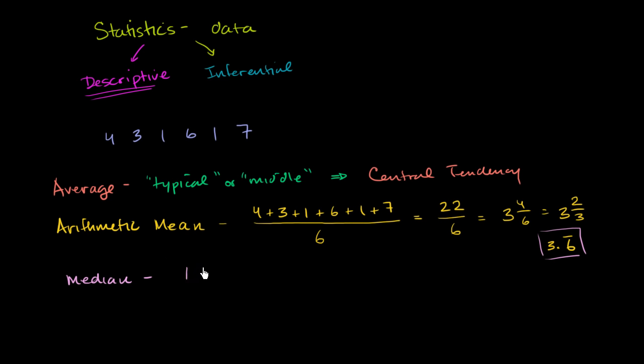So we have 1, then we have another 1, then we have a 3, then we have a 4, a 6, and a 7. So all I did is I reordered this. And so what's the middle number? Well, you look here. Since we have an even number of numbers, we have six numbers. There's not one middle number. You actually have two middle numbers here. You have the 3 and the 4. And in this case, when you have two middle numbers, you actually go halfway between these two numbers. Essentially, you're taking the arithmetic mean of these two numbers to find the median. So the median is going to be halfway in between 3 and 4, which is going to be 3.5.